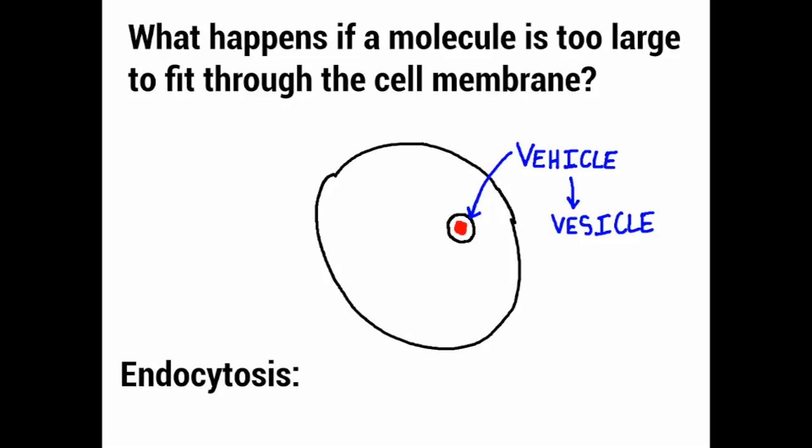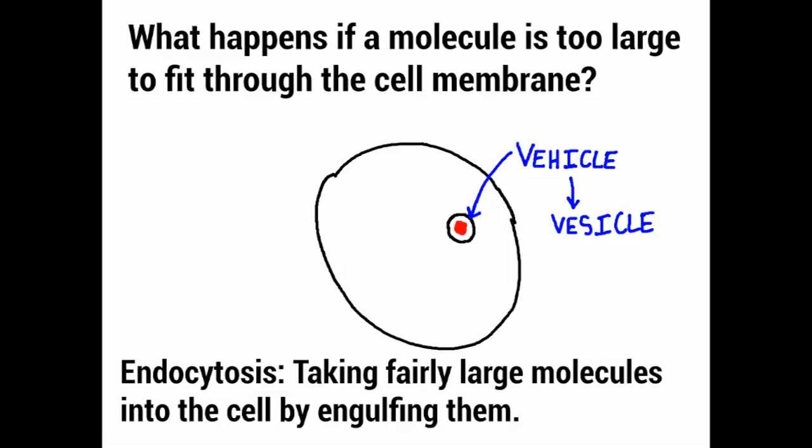So this whole process is known as endocytosis. It's when you take fairly large molecules into the cell by engulfing them. Engulfing basically means that you come around the molecule and engulf it, kind of as if you were hit by a wave in the sea and knocked over — you were engulfed by the wave.